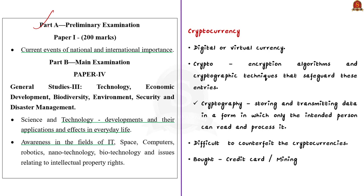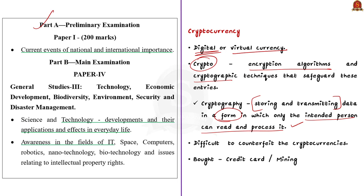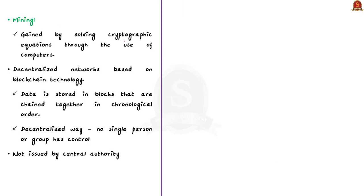What are cryptocurrencies? A cryptocurrency is a digital or virtual currency. The term 'crypto' in cryptocurrency refers to various encryption algorithms and cryptographic techniques. Cryptography is a method of storing and transmitting data in a particular form so that only those for whom it is intended can read and process it. Due to this highly secure feature, it is nearly impossible to counterfeit cryptocurrencies. Cryptocurrencies can be bought using a credit card or through mining. Mining is a process of earning cryptocurrencies by solving cryptographic equations through computers — when you solve the equation, you are rewarded with cryptocurrency, like a reward mechanism.